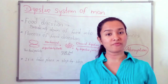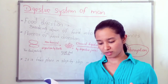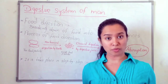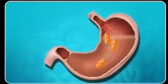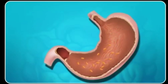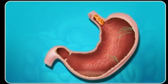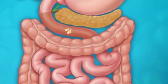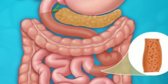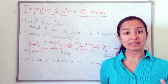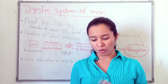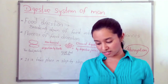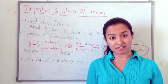There are two main functions of the digestive system. The first function is the conversion of complex food particles into simple food particles. The second function is the absorption of simple food particles into the body. These are the two main functions of the digestive system. Now we are going to discuss about the organs of the digestive system.